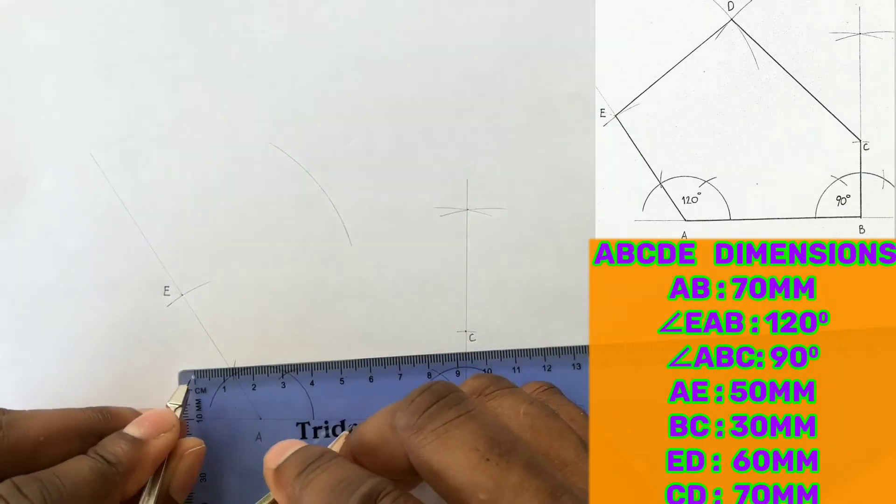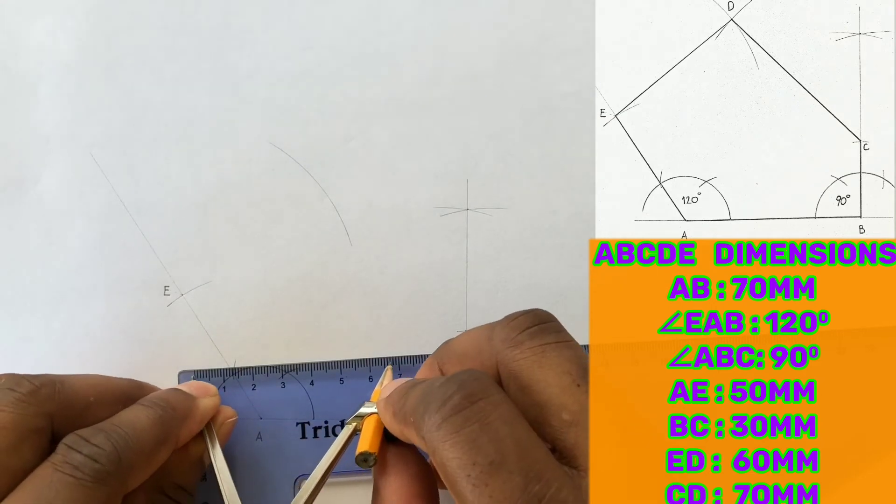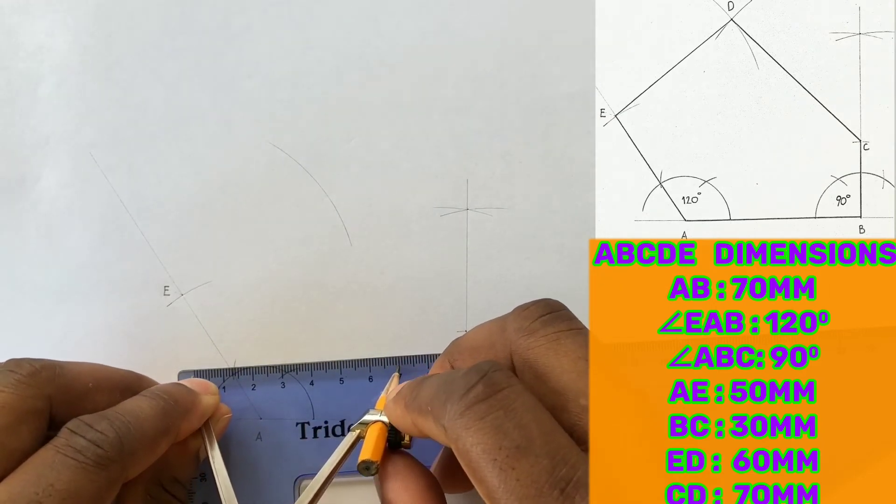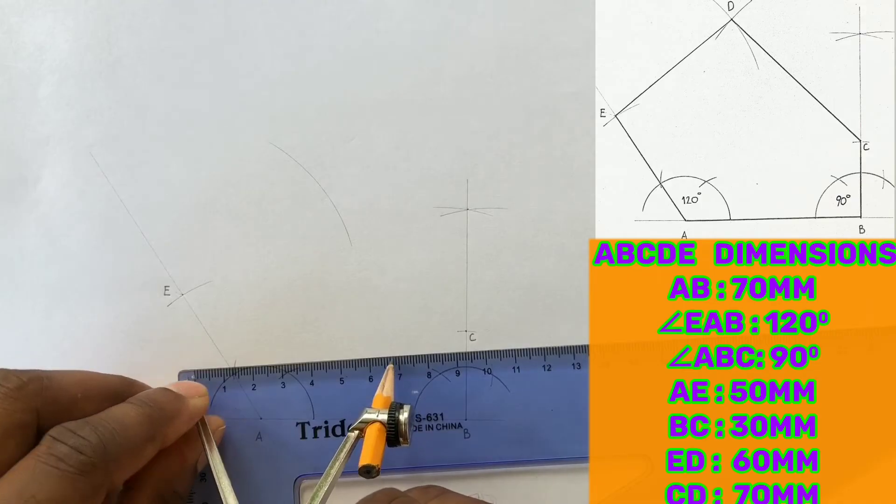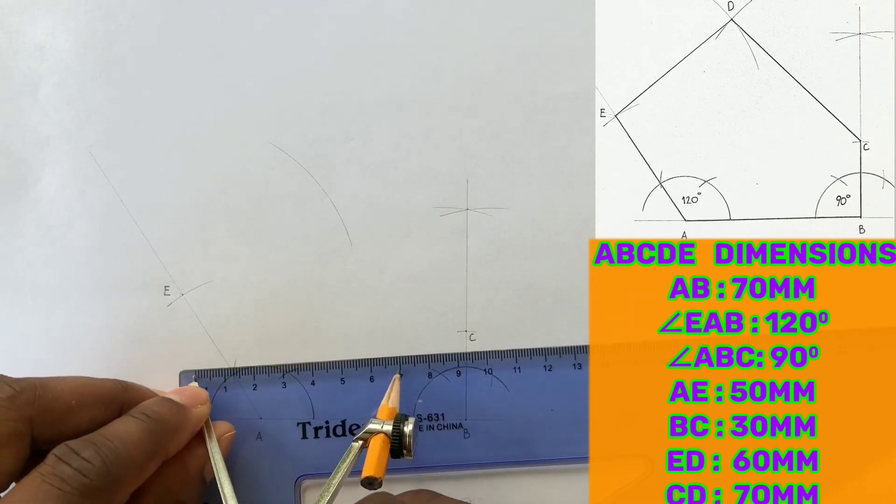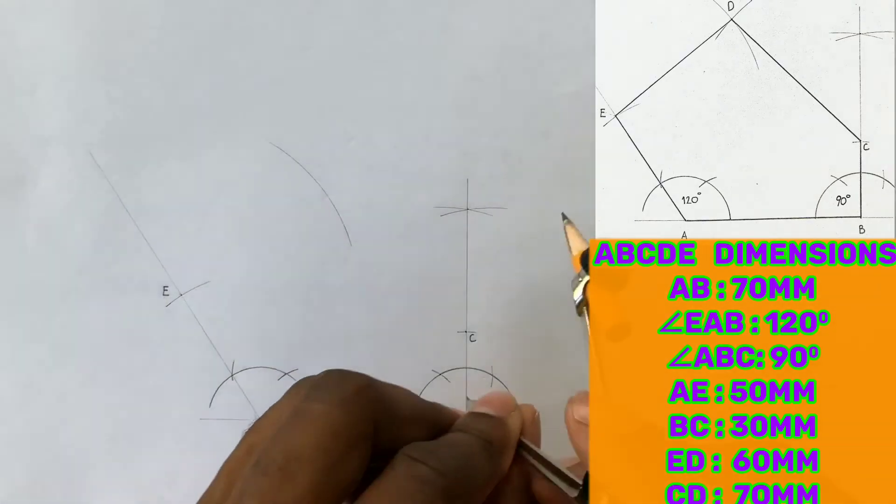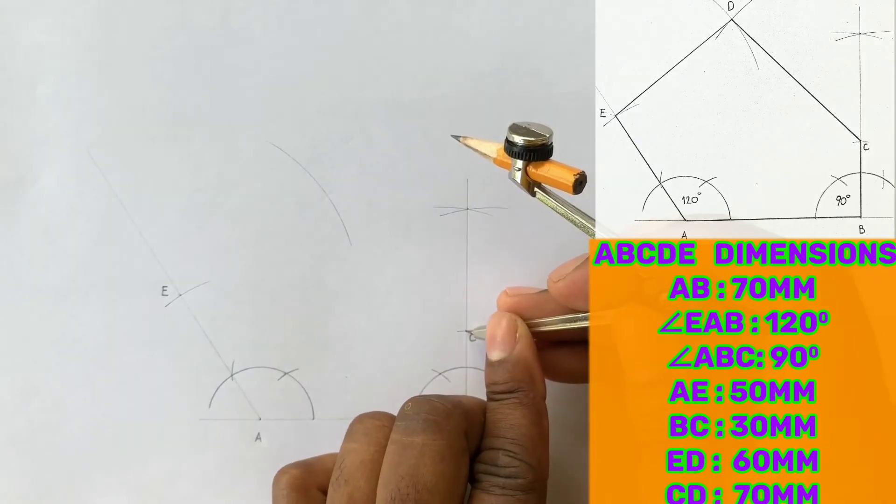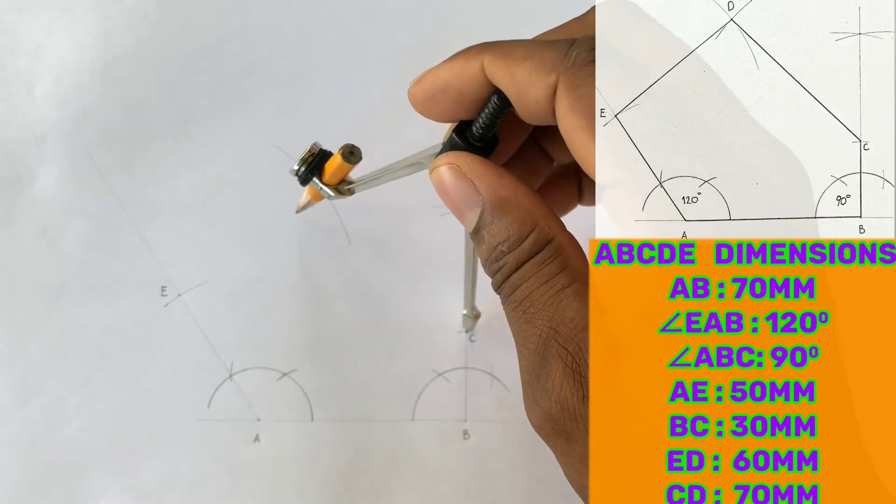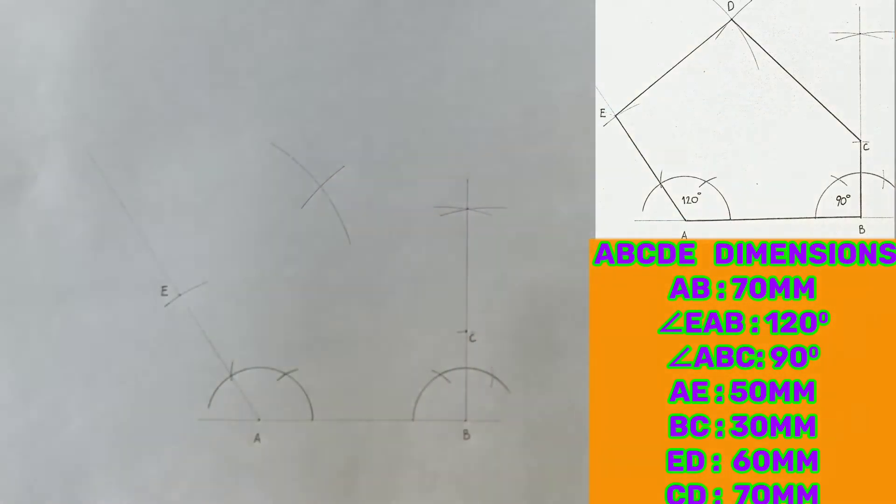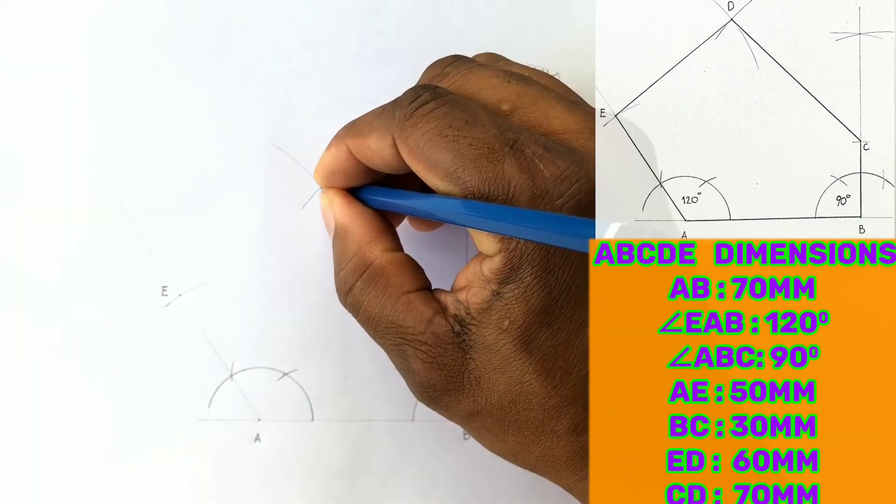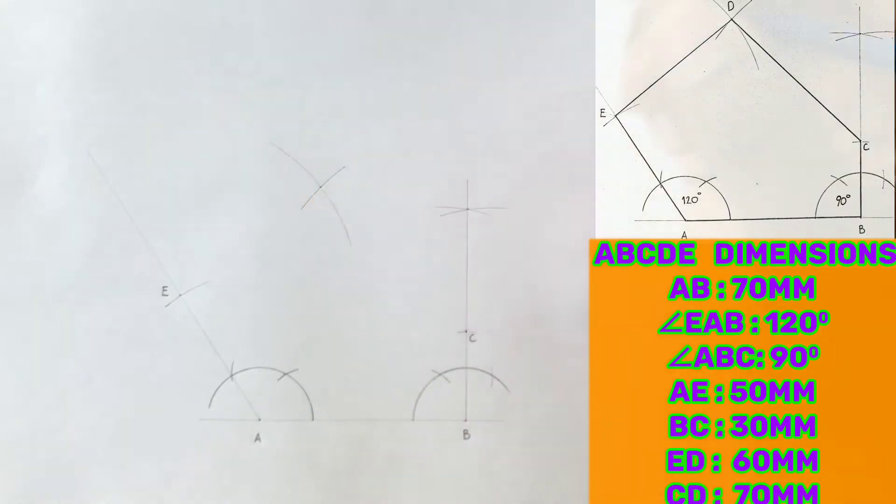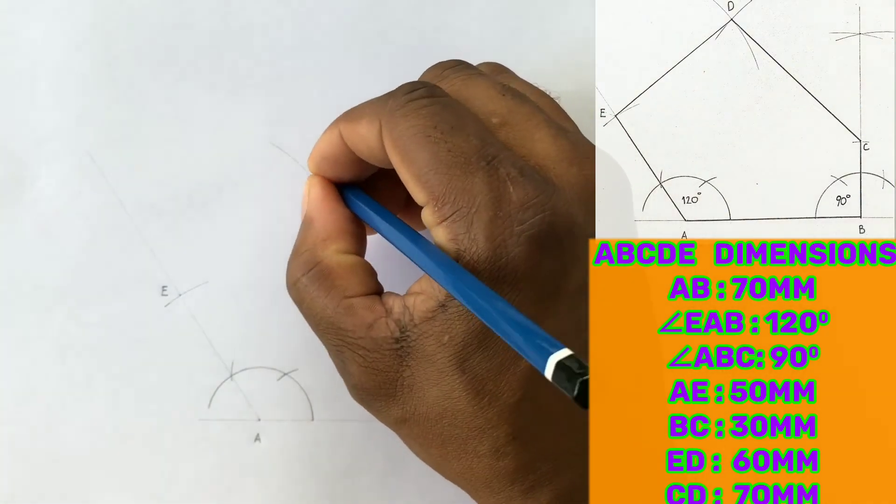Now open your compass to a radius of 70 millimeters, and from point C scribe an arc to intersect the previous arc you drew. The intersection of arcs will give you point D. Identify and label this intersection D.